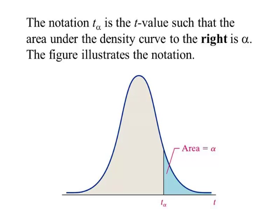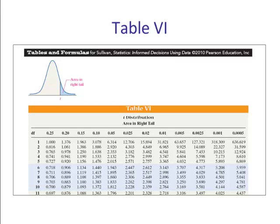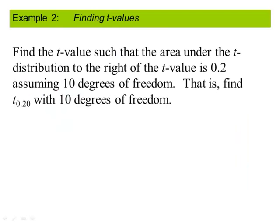Let's do an example. So here's table 6. Our degrees of freedom are the rows and the columns are actually area. Now that is different than table 5. These numbers in the body of the table, if you see here, they're almost all larger than 1, and the reason why is these are actually t values. And these are probabilities.